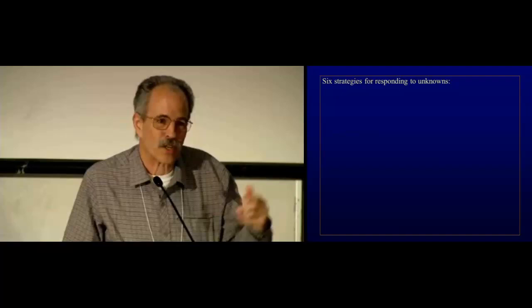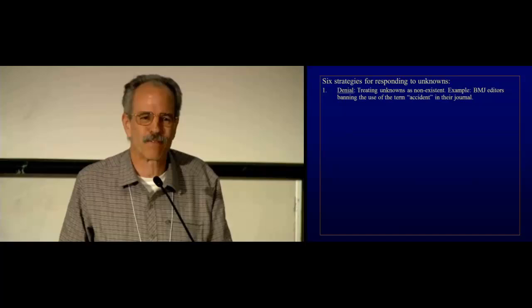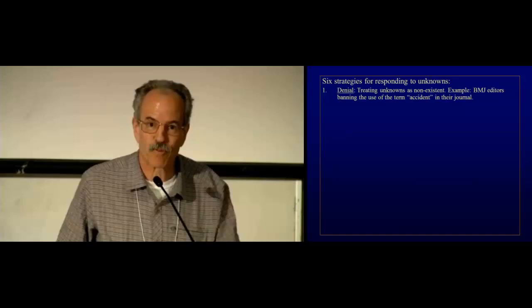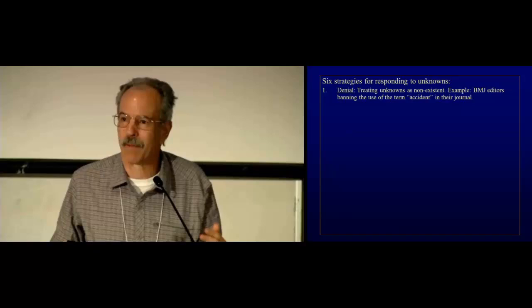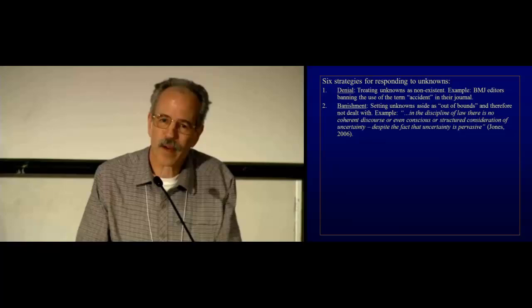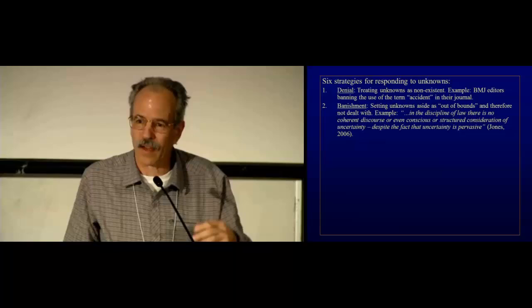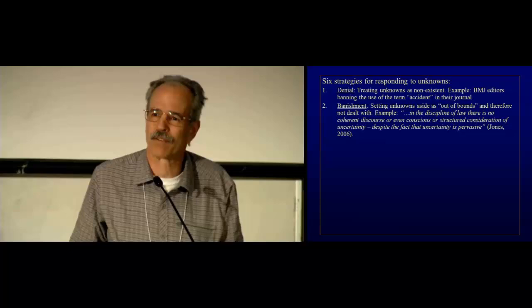So I'll give you six examples of strategies for responding to unknowns. Denial. Let's just say that they don't exist. Like the British Medical Journal editors, banning the use of word accident from their journal. There are no accidents. Every injury or illness has a cause, and somebody can be blamed for it. Okay, so that's denial. Now, denial may sound like a bad idea, but if the only alternative is paralysis, then denial may be at least temporarily adaptive. Banishment. It's related to denial, but that's where we say, well, we recognize that there are these unknowns, but we're setting them outside as beyond our ken or beyond the scope of our inquiry. One of my favorite examples is the Diophantine mathematicians who, when they encountered negative numbers, said, oh, negative numbers don't make any sense to us, therefore that's not part of mathematics.